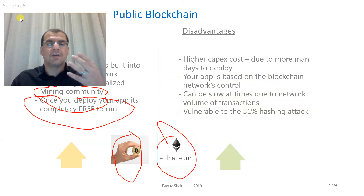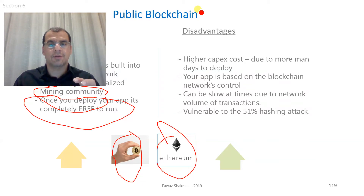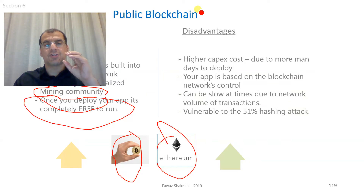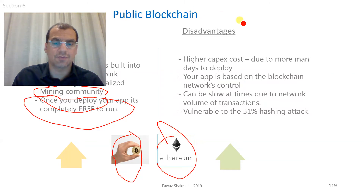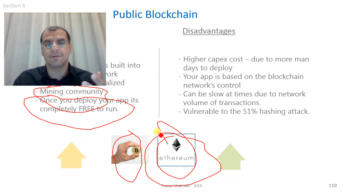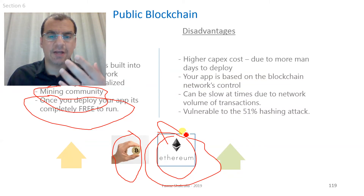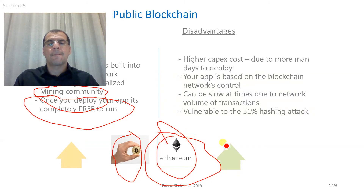Your app is based on network control — a disadvantage. Your app is within the control of the blockchain network's resources. If there is high traffic volume of transactions on the network on a given day, your application will suffer from performance issues and slowed response times. For example, if you deploy your solution on Ethereum and that week there's high volume of buying and selling of Ether, it affects your application's transactions.